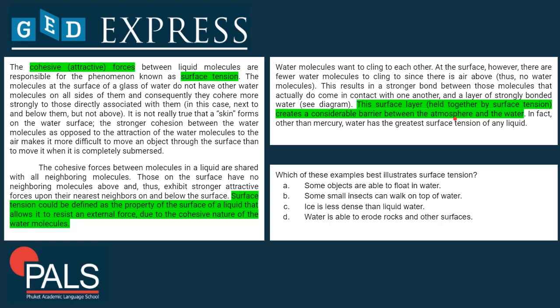What possible answers do we have? Which of these examples best illustrates surface tension? The options are: some objects are able to float in water; some small insects can walk on top of water; ice is less dense than liquid water; water is able to erode rocks and other surfaces. Looking at answer one — floating means part of the object is submerged and another part is on top, so it doesn't really relate to surface tension, since the floating object breaks through the surface.